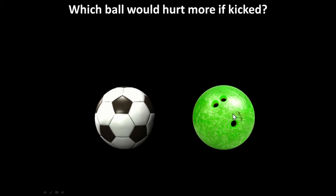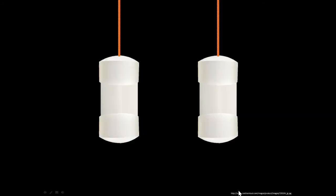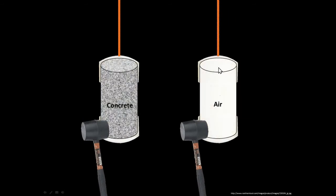Which ball would hurt more if kicked — a soccer ball or a bowling ball? Hardness has a little to do with it, but let's take that out of the equation. Clearly the bowling ball would be harder, even if wrapped in a pillow, because it has more mass, it has more inertia, and it resists accelerating more. That resistance to acceleration — we call it 'ouch' if you kick it. More mass, more inertia. There's a demonstration with PVC pipes with caps on the end: one filled with concrete, one with air. The concrete one has much more mass, much more inertia, much more resistance to acceleration.